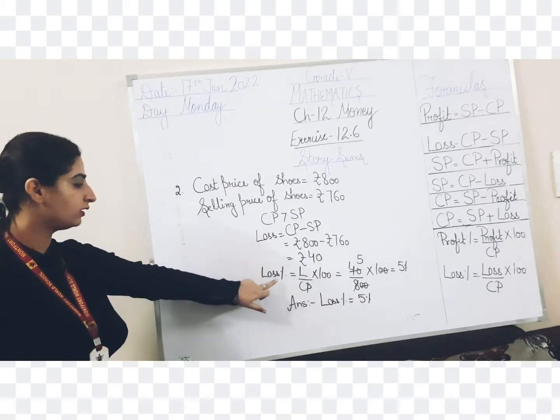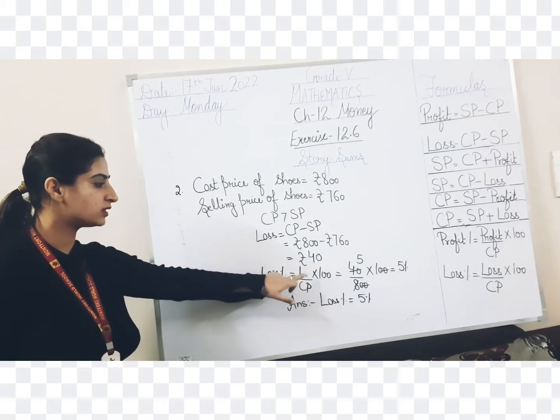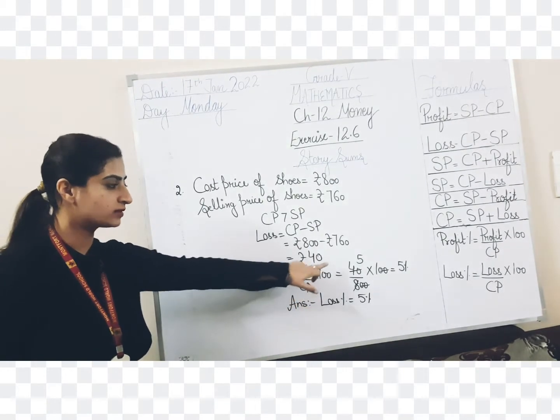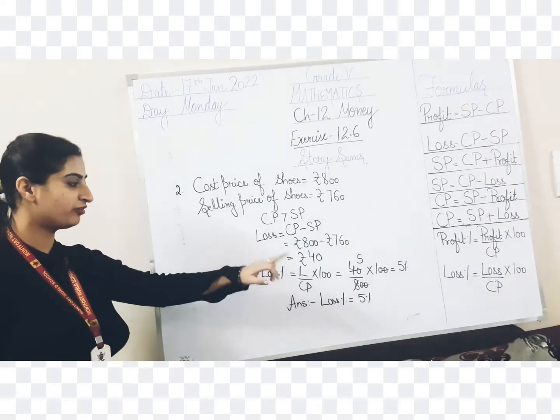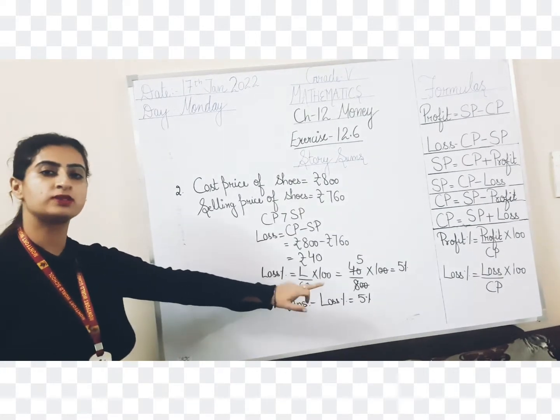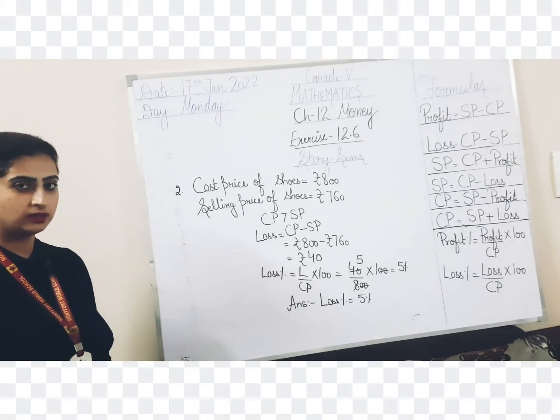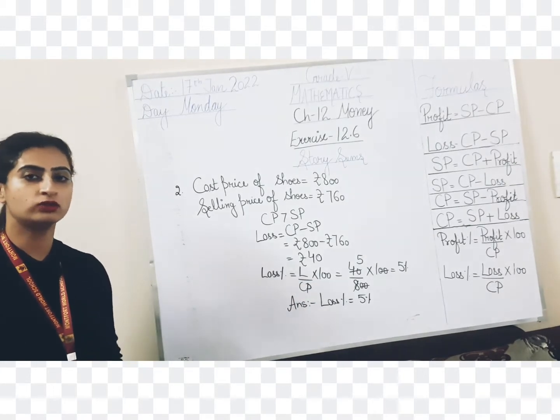Now put it with the formula. Loss percent equal to loss upon CP multiply 100. Loss we already have 40 upon 800 multiply 100. That gives you 5%. So answer is loss percent equal to 5%. Now let us do third question.